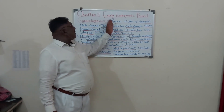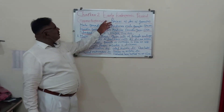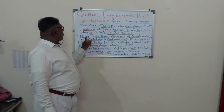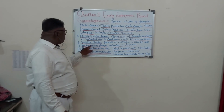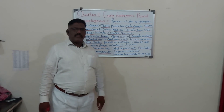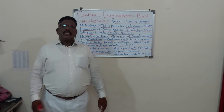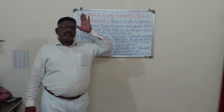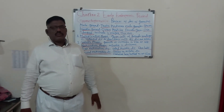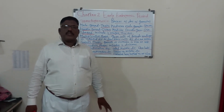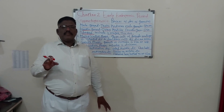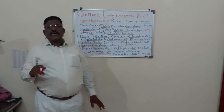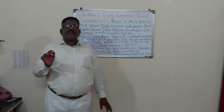In today's period we have started the second chapter. The name of the chapter is the early embryonic period, and in this chapter we studied the first topic — gametogenesis. Gametogenesis has three stages: multiplication phase, growth phase, and maturation phase. Maturation phase again has two divisions: first maturation division and second maturation division. That is sufficient for today; in the next period we will see the next process in this chapter.